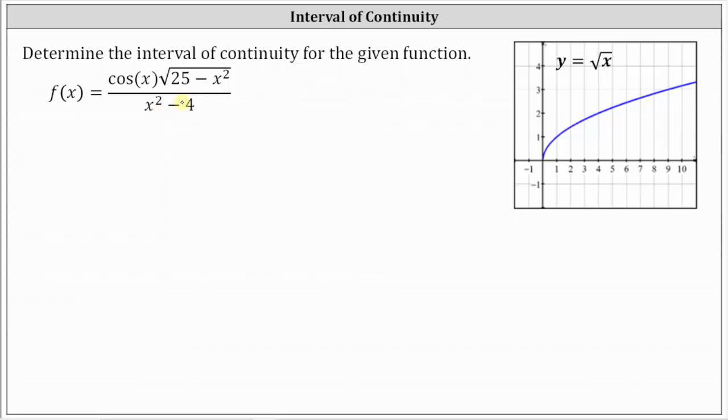First, we know division by zero is undefined. So the first condition for continuity is that x squared minus four can't equal zero.